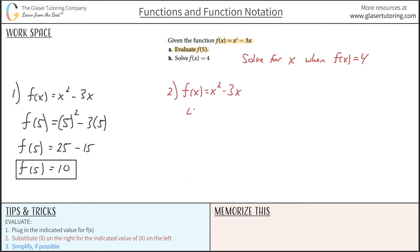So instead of writing f of x, I'm going to write 4. And that is now equal to x squared minus 3x. So our job is to now solve for x, because that's what's left.